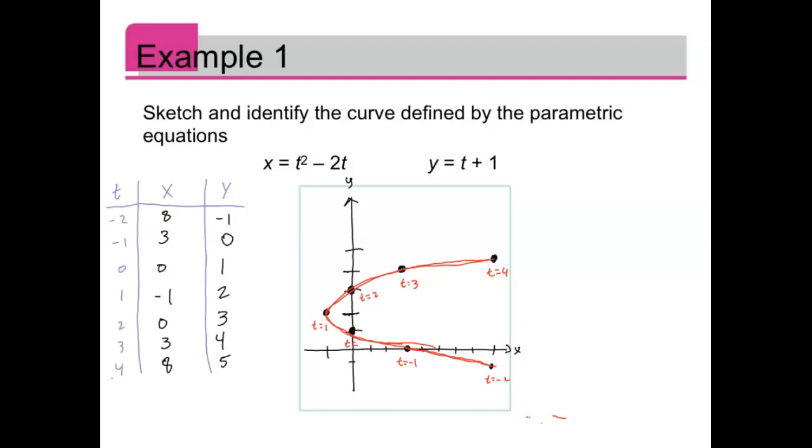The way I can do that, notice in this equation it's possible to isolate t. I could just subtract 1, so t equals y minus 1. Then I could substitute it into the x equation. So x equals (y minus 1) squared minus 2 times (y minus 1). If you multiply that out, this would just be a quadratic equation in y. So x is a function of y, which is a sideways parabola.